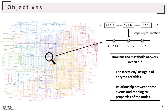In this project, we tried to understand how this complex network evolved. More precisely, we explored the conservation and the origin of fungal enzyme activities and the relationship between these events and topological properties of the node.